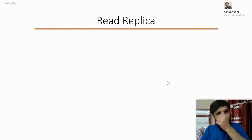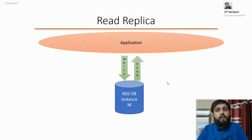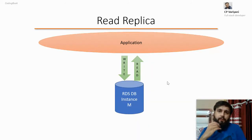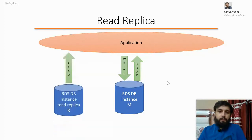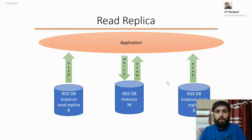Now, an important concept: read replicas. Let's suppose you have an application and you have created an RDS database instance — a master instance — where you are doing both write and read operations. Going forward, suppose there is so much load on your application — millions of requests are coming — what will happen? It will slow down and degrade your application's performance. To solve this, AWS provides something called read replicas. Read replicas are used for read purposes only, meaning instead of putting all the load on the master writer, you are segregating the load to different read replicas.